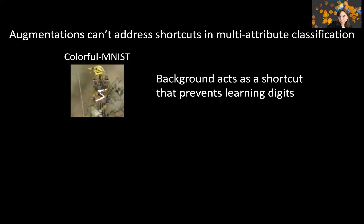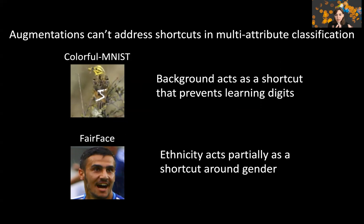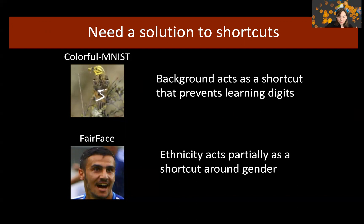This is not only limited to synthesized images. If you consider images of faces like FairFace and run multi-attribute classification on ethnicity, gender, and age, you will discover that ethnicity can act as a shortcut and partially reduces the ability to learn gender and age. This means we need a solution for the shortcut problem that generalizes contrastive learning to new data modalities where we cannot handcraft data augmentations, and also allows the learned representation to support multi-attribute classification.